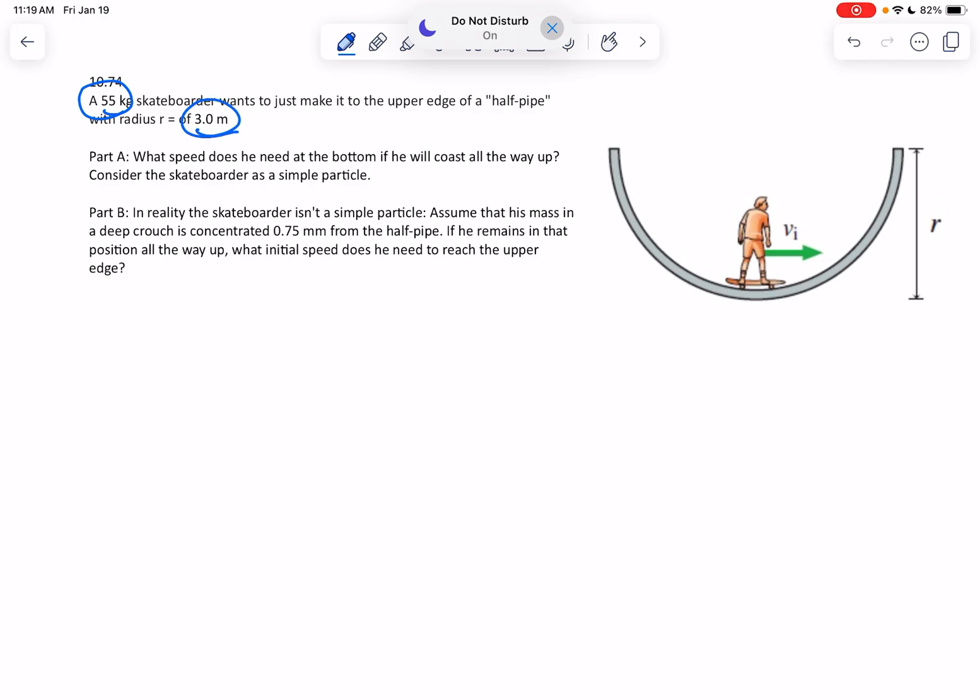The question is, what speed does he have to have? He's got kinetic energy, and you know that's 1/2 mv². He's got to have enough energy to reach this height, so you're going to set that equal to mgh.